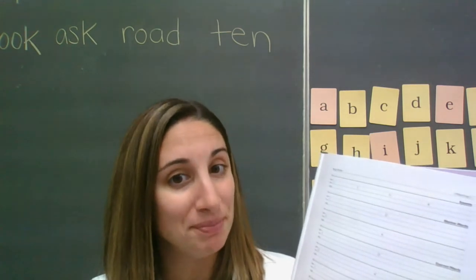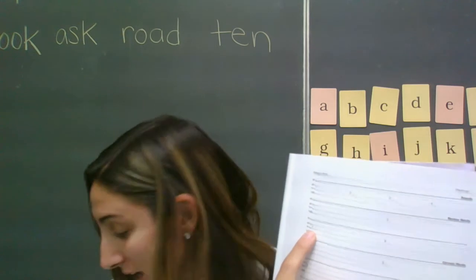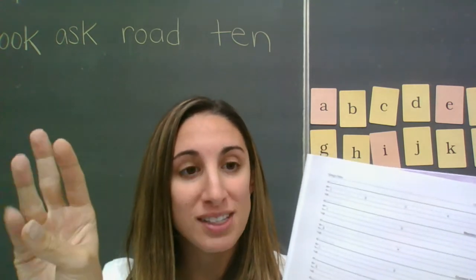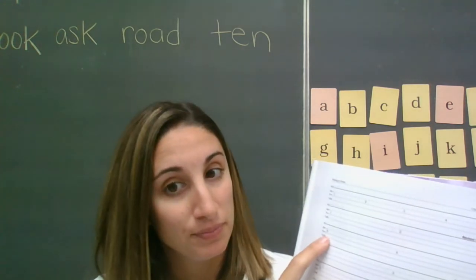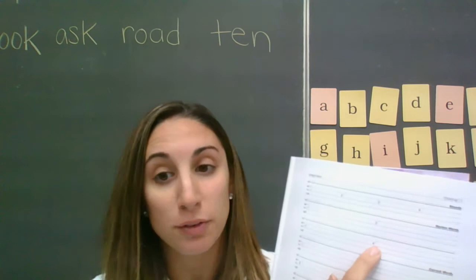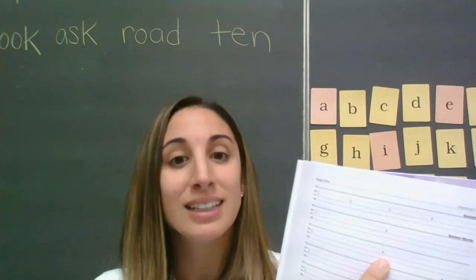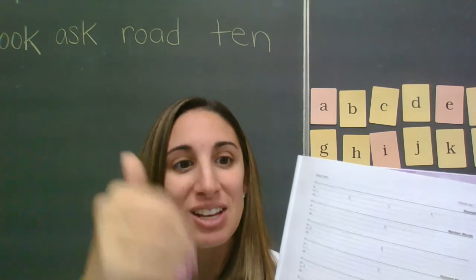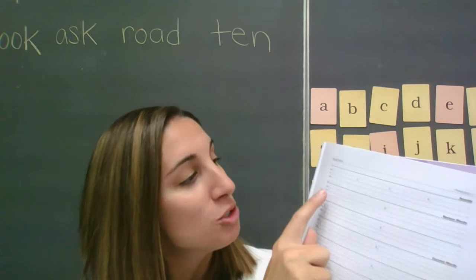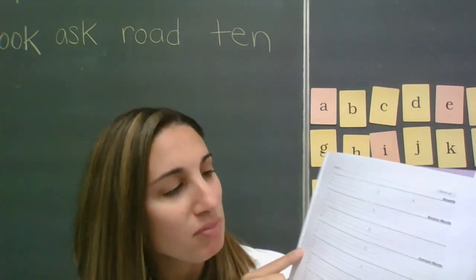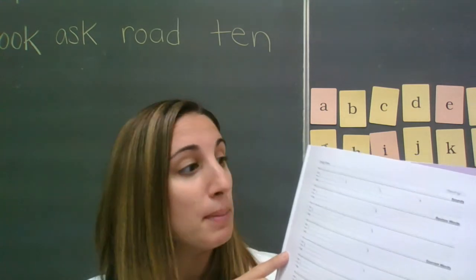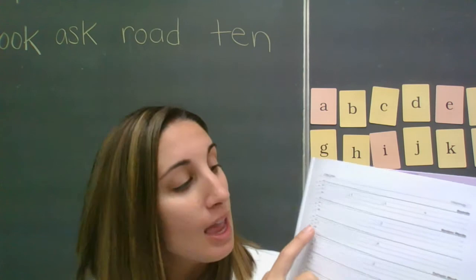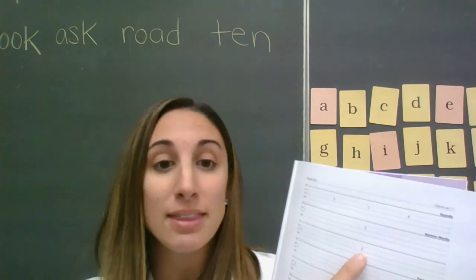Remember to pause if you need more time. Number three, the next word is shift. Say it. Shift. Let's tap it. Sh - i - f - t. Shift. And lastly, number four, I want you to write the word sprint. Say it. Sprint. Let's tap it. S - p - r - i - n - t. Sprint. That's a hard one. Make sure after you finish those four review words that you are marking them. Pause the video, take your time, and check. Number one was quiz, number two was trust, number three was shift, and number four was sprint. Check your spelling and then mark them when you're confident.